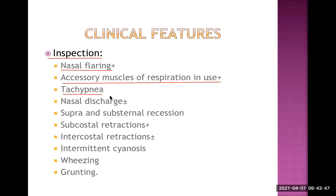Regarding diagnosis of tachypnea, there are specific thresholds by age group. Up to two months of age, the upper limit of respiratory rate is 60; more than 60 is called tachypnea. From two months to 12 months, the upper limit is 50; more than 50 is tachypnea. From one year to five years, the upper limit is 40; more than 40 is tachypnea. Never forget this in pediatrics — it is an absolutely important question asked by any pediatrician.